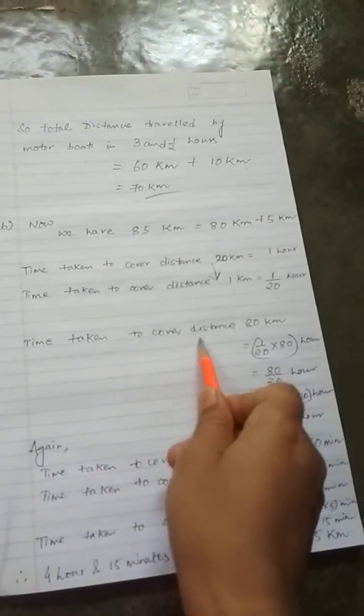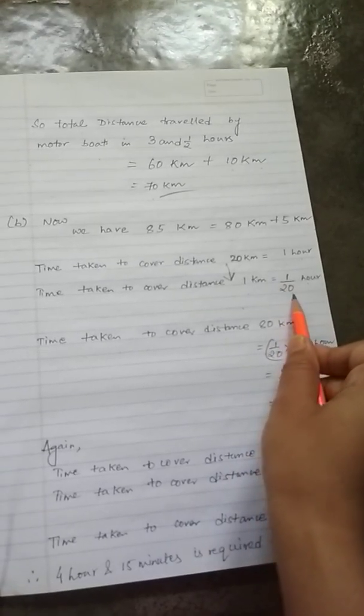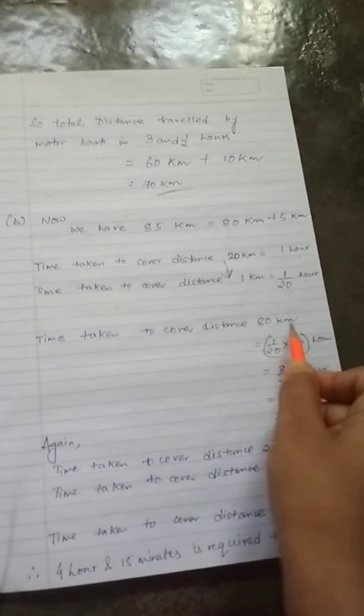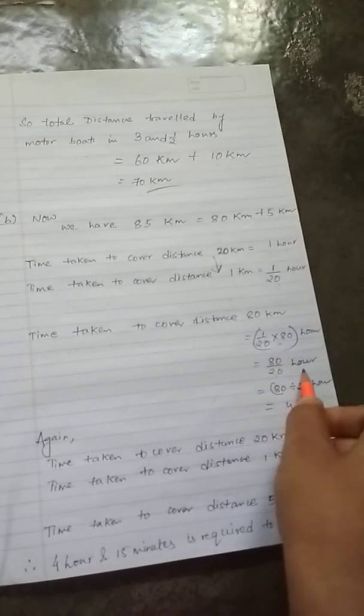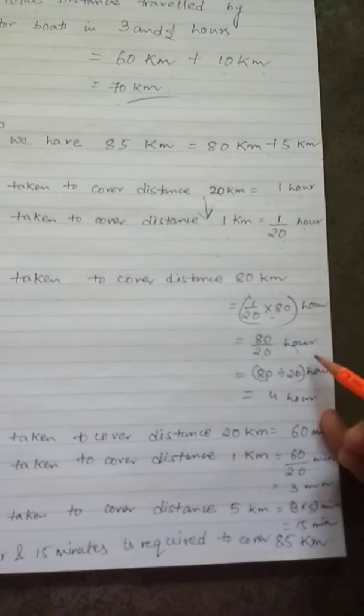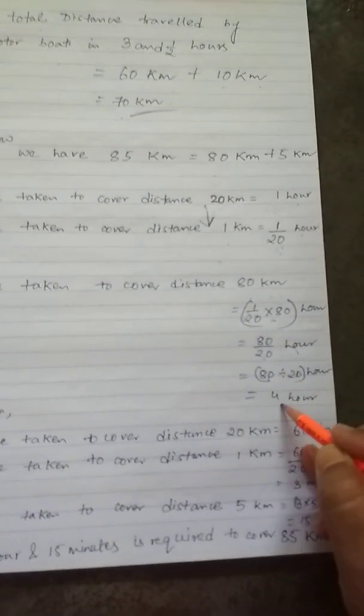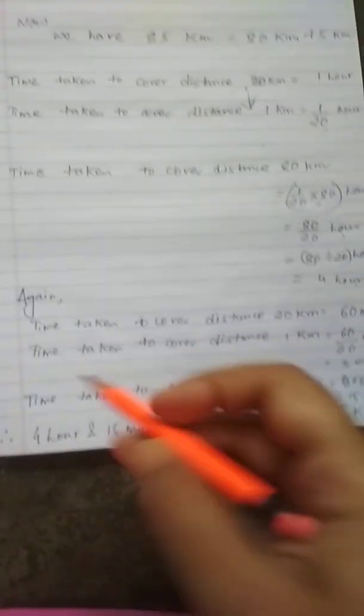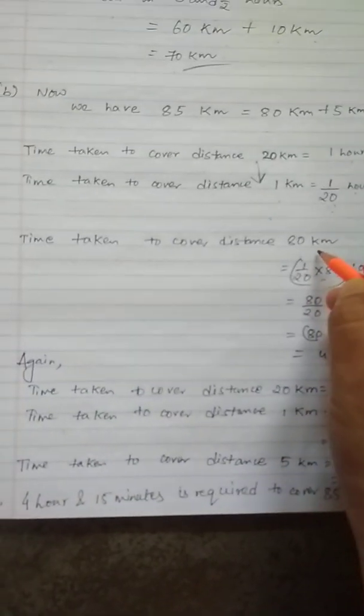Now the time taken to cover the distance 80 km. If 1 km is covered in 1 by 20 hour, then 80 km will be 1 by 20 into 80, or 80 by 20 hour. Or we can write 80 divided by 20 hour. And you know 80 divided by 20 equals 4 hours.